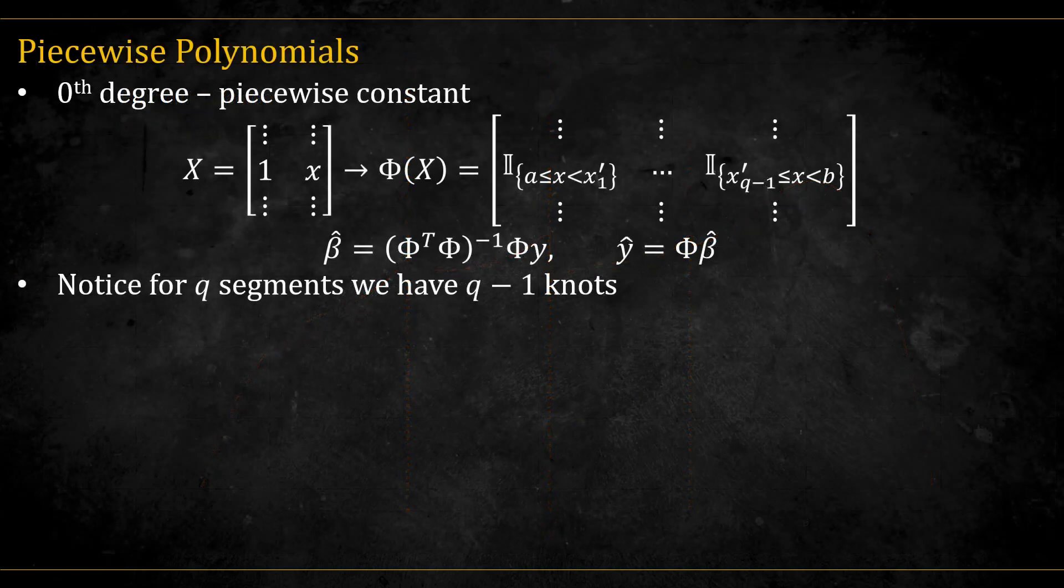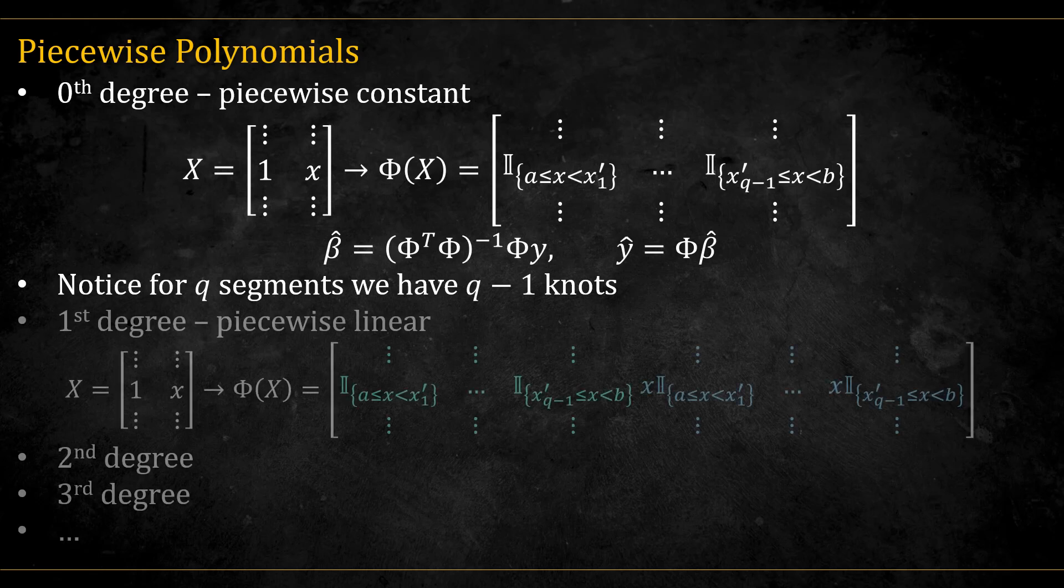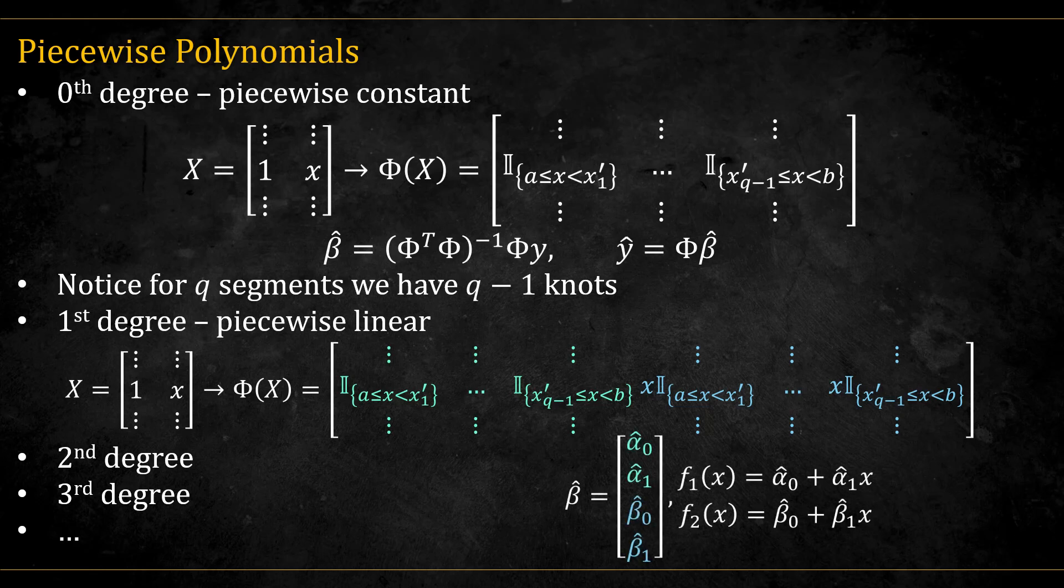How do we fit these piecewise functions? For piecewise constant, we have an indicator function for each segment as a feature. These are the intercepts, so each column will have 1s for the data points in that segment and 0s elsewhere. Using this feature matrix phi, the solution is the same. For the piecewise linear, we can simply expand the matrix and in addition to the intercepts, add the x's multiplied by the indicator function for the slopes. We'll get a vector of coefficients, first for the different intercepts and then for the different slopes in each segment. For example, if we have one knot and two segments, we'll end up with this vector of coefficients. And we can continue and do the same for second and third degree as well.